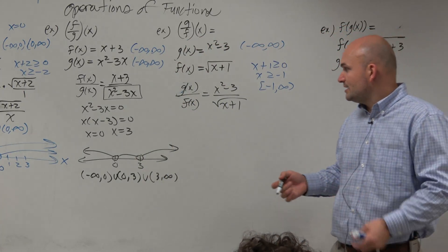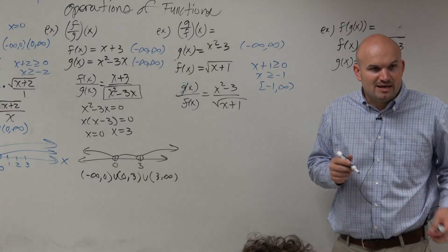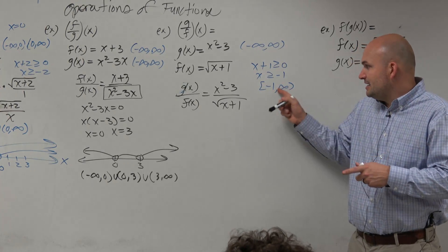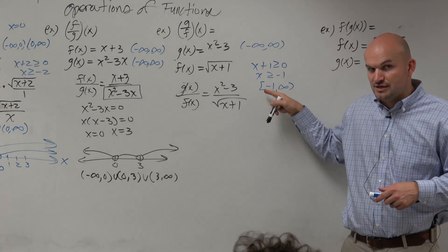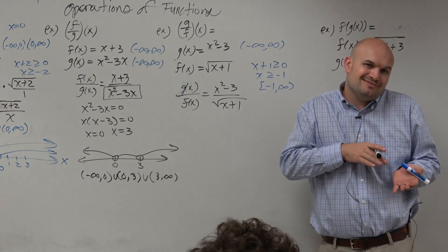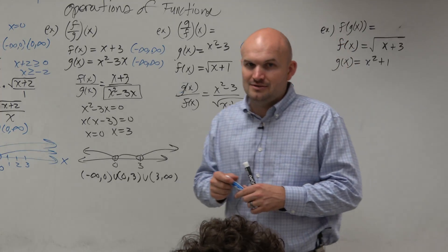So real quick, what do I got to do to find the domain? I have the domain here already restricted from negative 1 to infinity. But here I have negative 1 being included. So now all I want to do is change it to not being included.